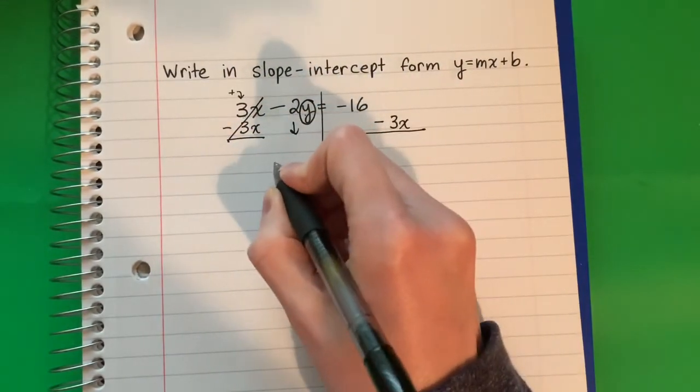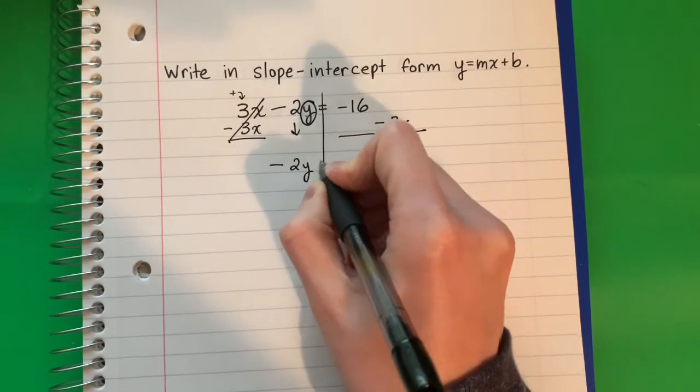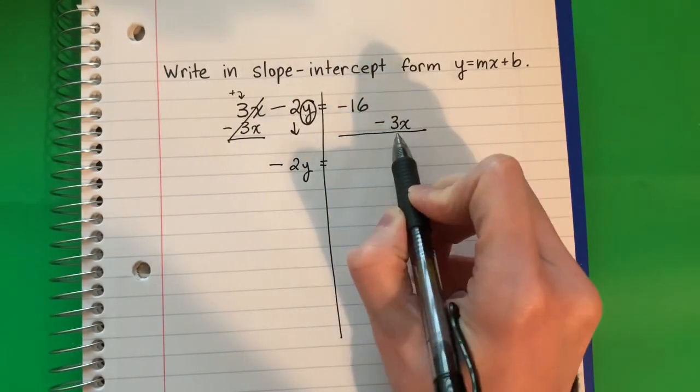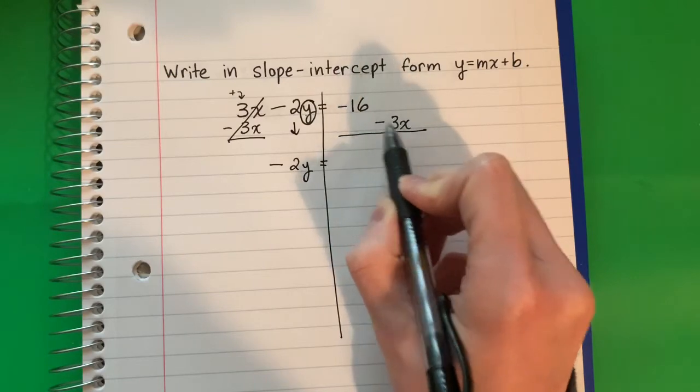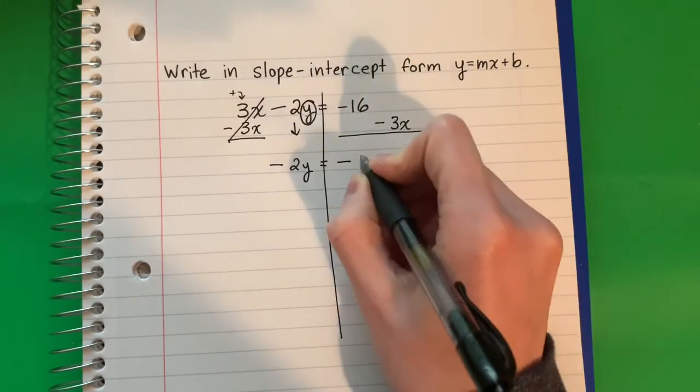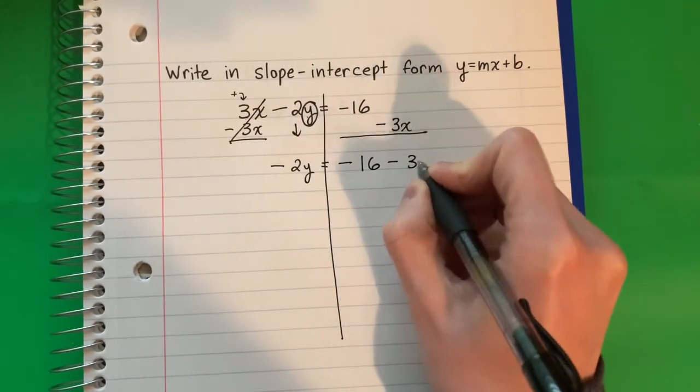Copy down negative, don't forget your negative. Negative 2y equals. And you're going to copy because these have different letters. So no calculator. Just copy. Negative 16 minus 3x.